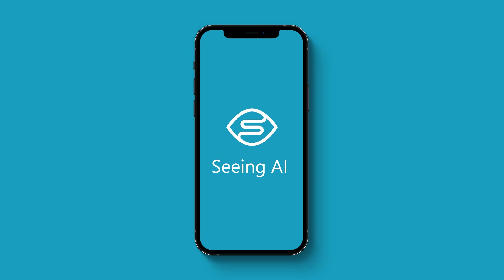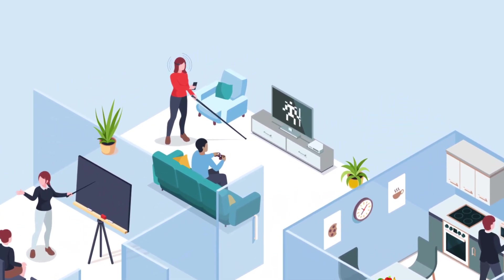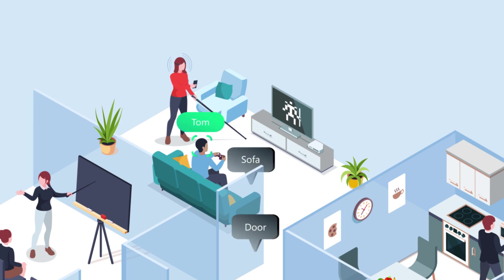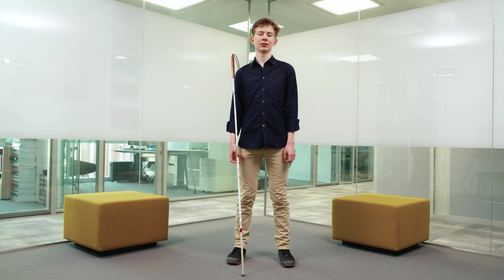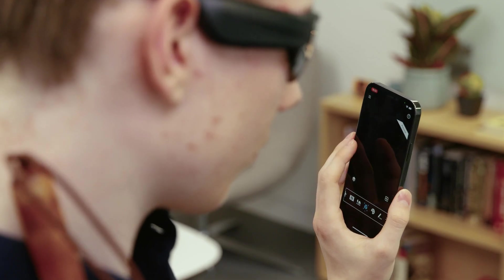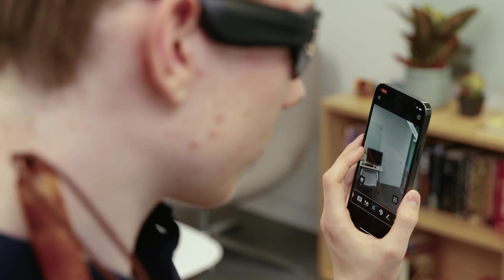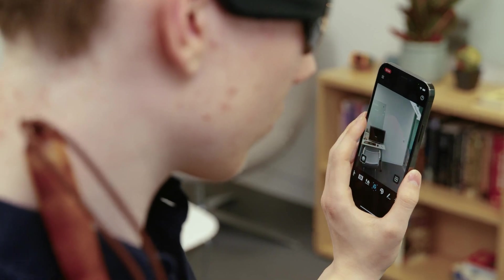The Seeing AI World Channel provides an audio augmented reality experience to enable you to understand and explore your environment. You'll be able to hear people and things in the room announced from their 3D position — for example, the word 'chair' coming from the chair. This requires that you wear headphones, but make sure to choose headphones which do not block out external sounds. Here we have the Seeing AI app open with the VoiceOver screen reader running. We can swipe over to the channel switcher and up to the World Channel.